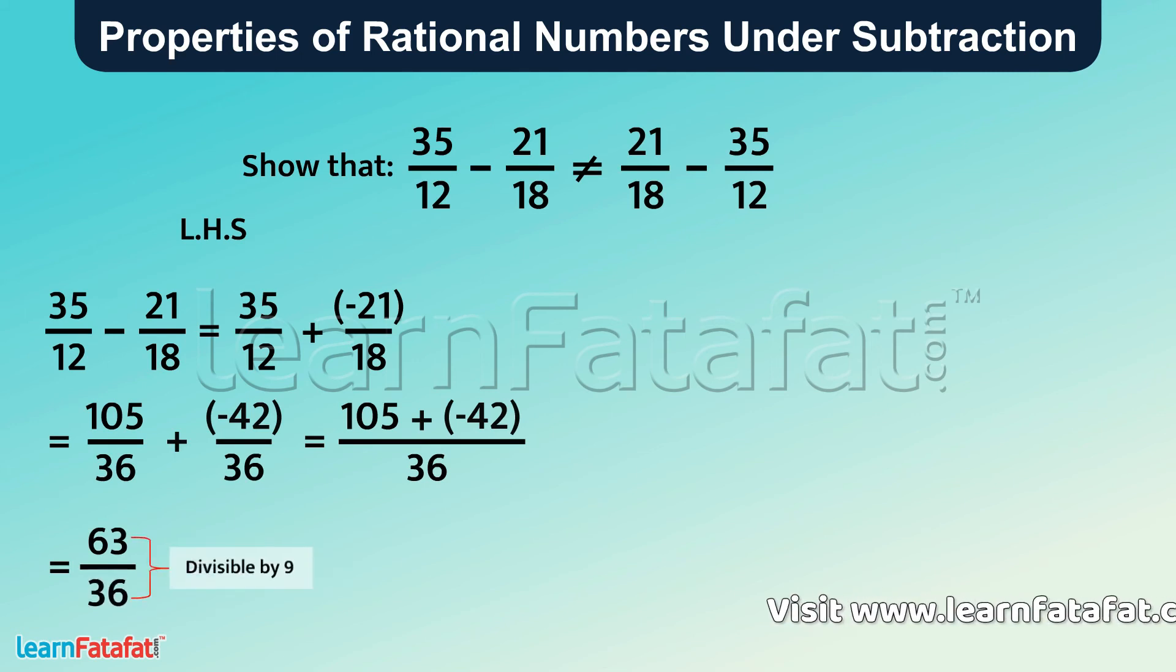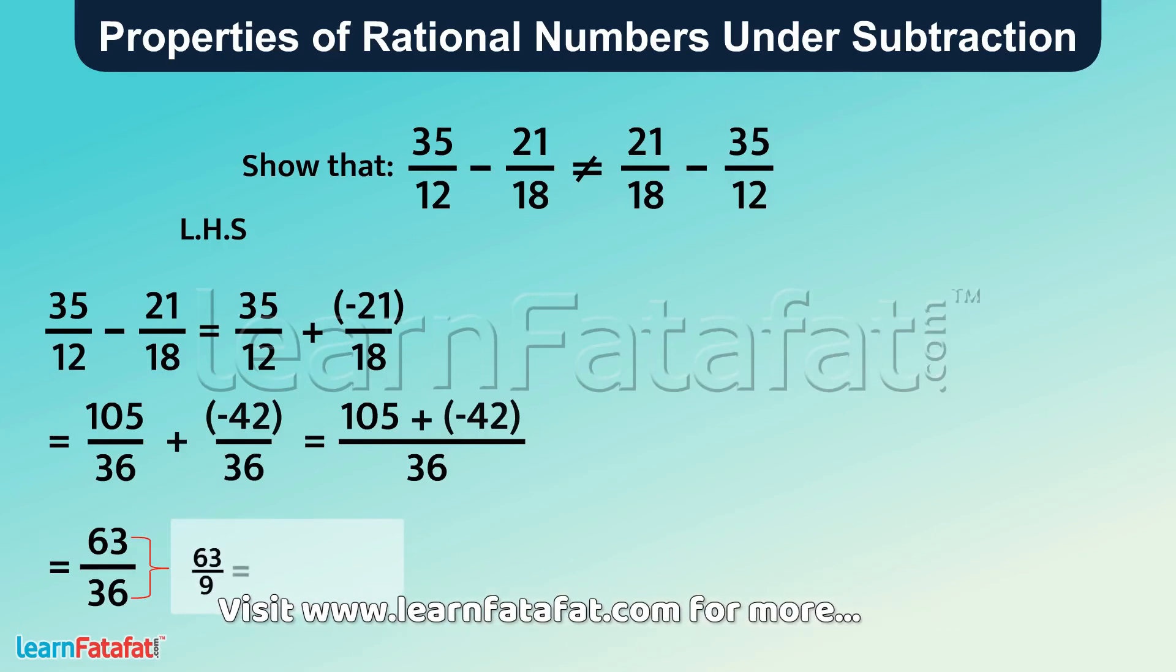Both are divisible by 9. So by dividing 63 by 9 we get 7, and by dividing 36 by 9 we get 4. So the resultant fraction is 7 by 4.